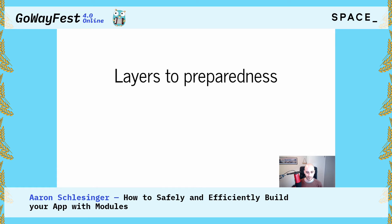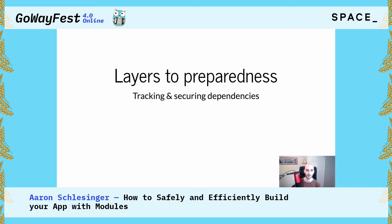What these two additions mean for dependencies is that you need to be prepared for the change. I call it layers of preparedness, because there are discrete steps you can take in a specific order to get prepared for moving your project completely over to modules. Number one: tracking and securing dependencies. This is fairly simple. What it essentially means is how do you keep track of the code you depend on — you used to do this with Glide or DEP and now there's a new way — and also how do you make sure you're downloading the right code.